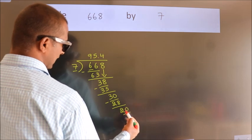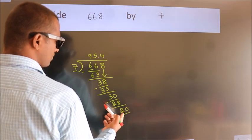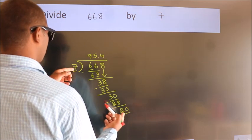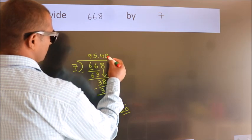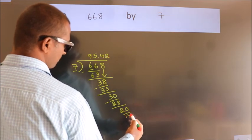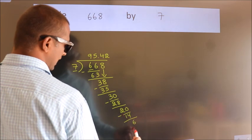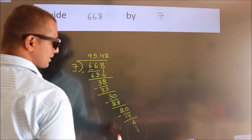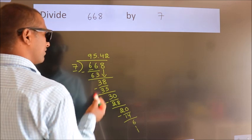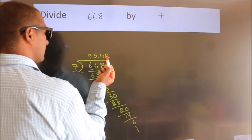So 20. A number close to 20 in the 7 table is 7 twos, 14. Now we subtract, we get 6, and the division continues. It is enough if we go up to two decimal places.